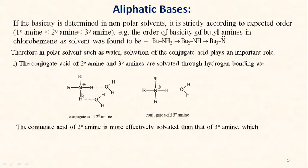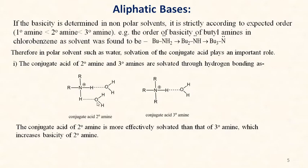The conjugate acid of secondary amine is more solvated because it is capable of forming two hydrogen bonds, while the conjugate acid of tertiary amine forms only one hydrogen bond. Therefore the conjugate acid of secondary amine is more efficiently solvated than that of tertiary amine, which increases the basicity of secondary amine.